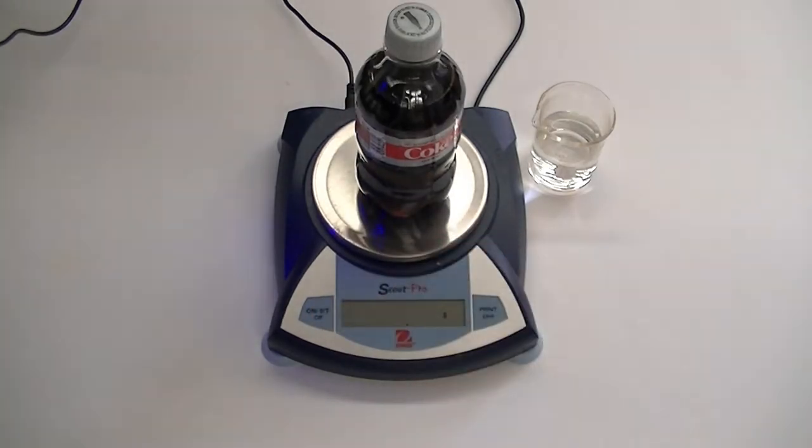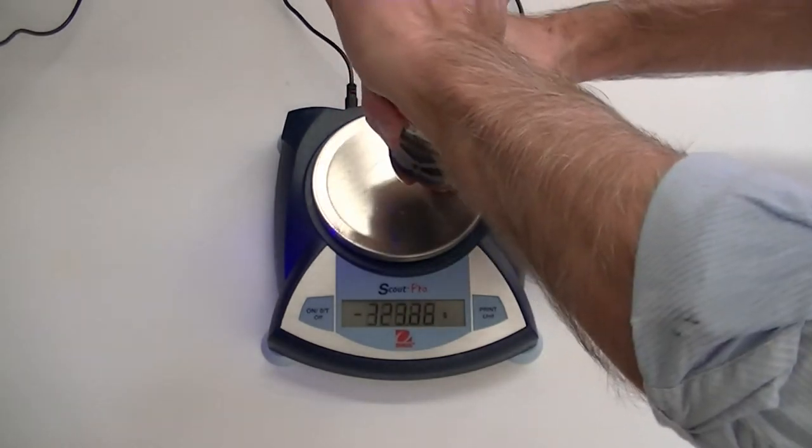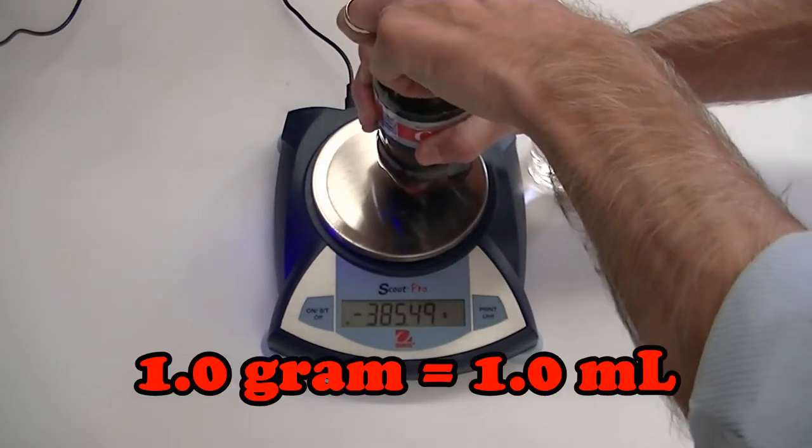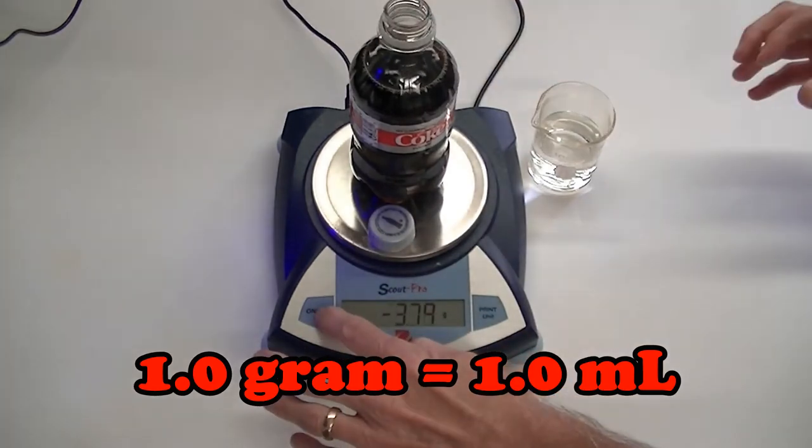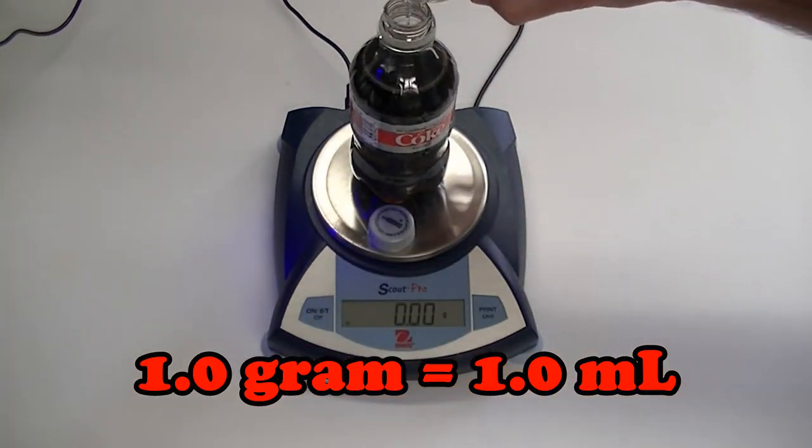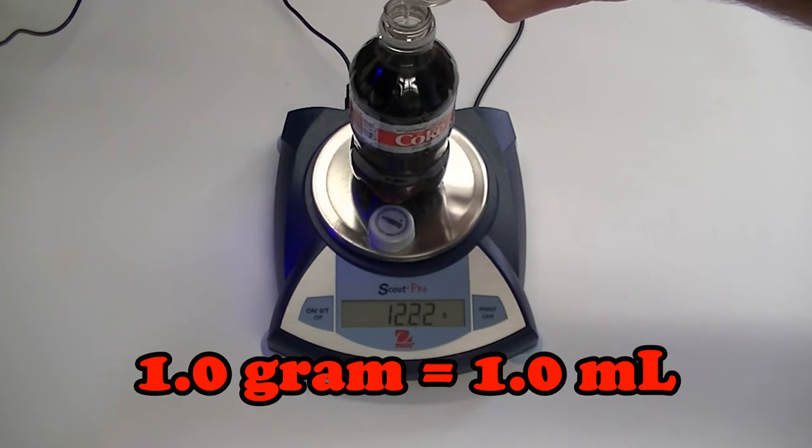Finally, we need to find the volume of the headspace. To do this, we'll use the fact that one gram of water takes up one milliliter of volume. Because of this fact, we can find the volume of the headspace by finding the mass of water in grams required to fill the headspace.